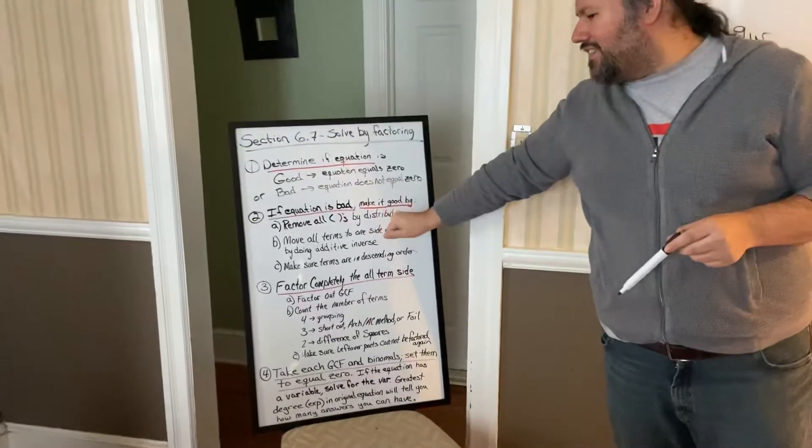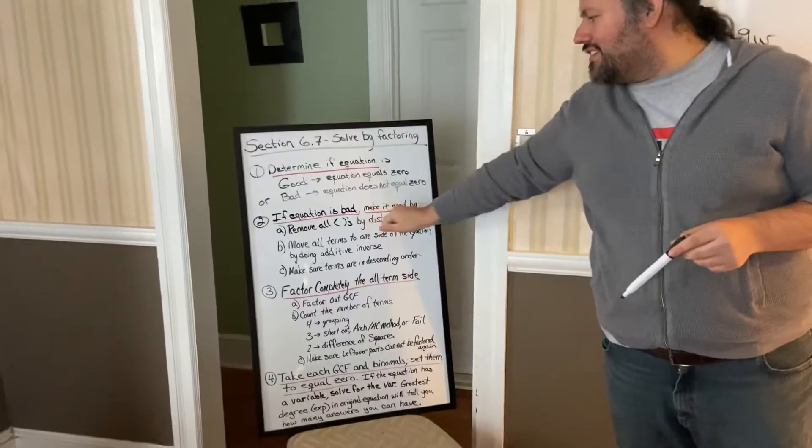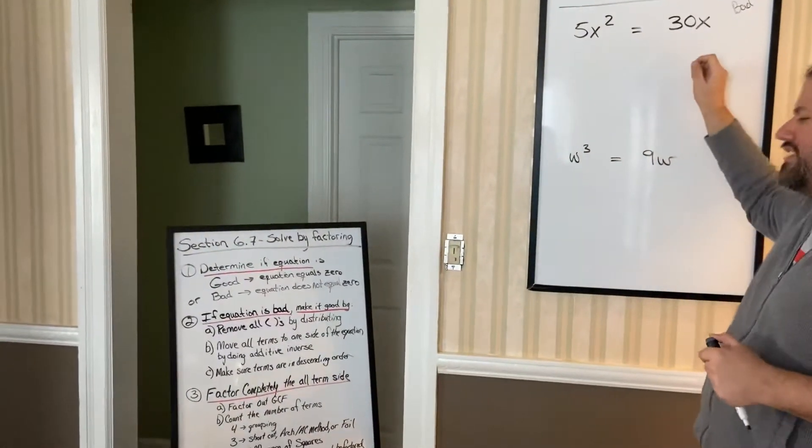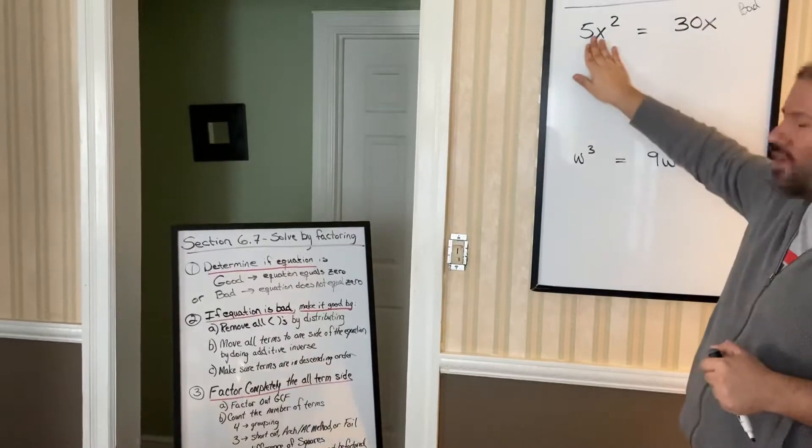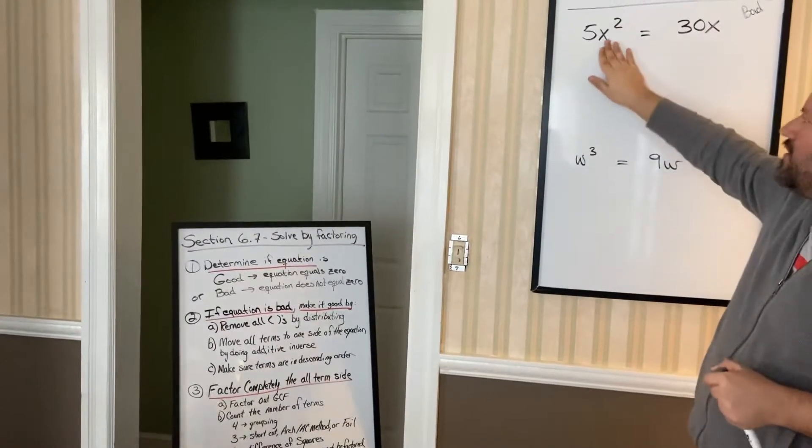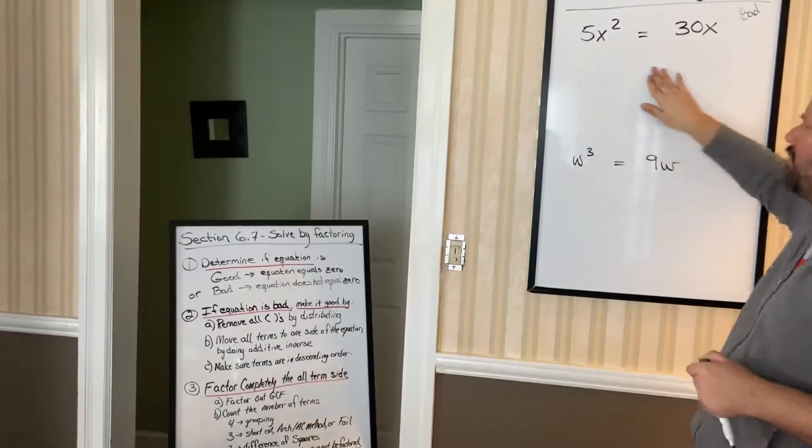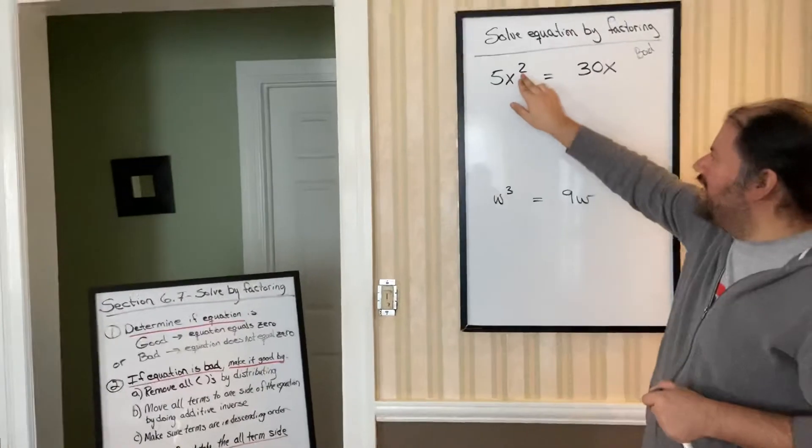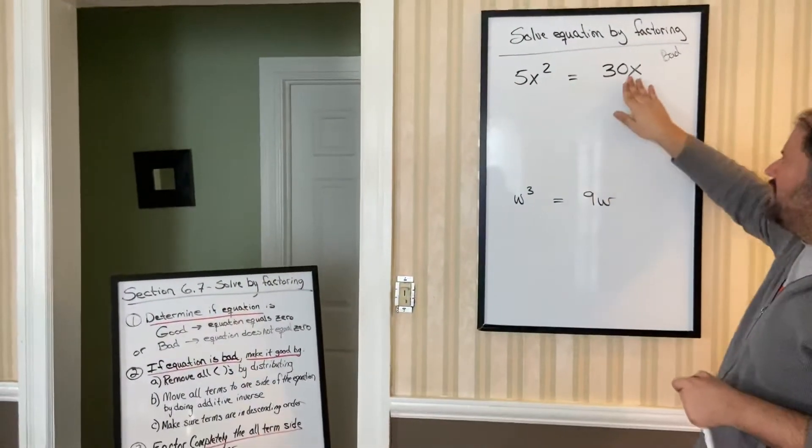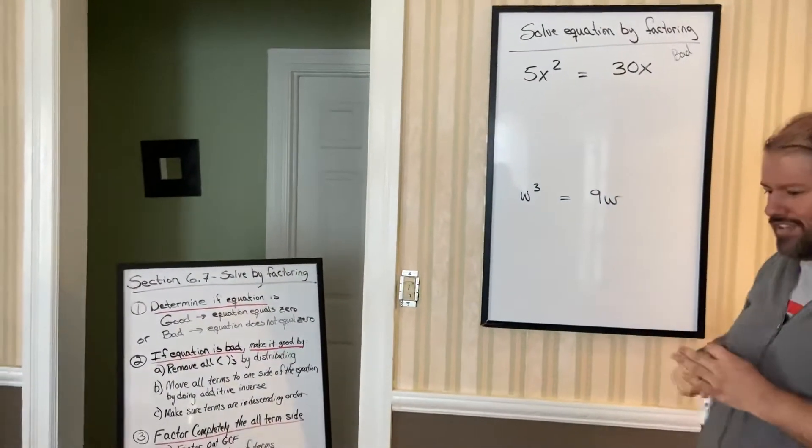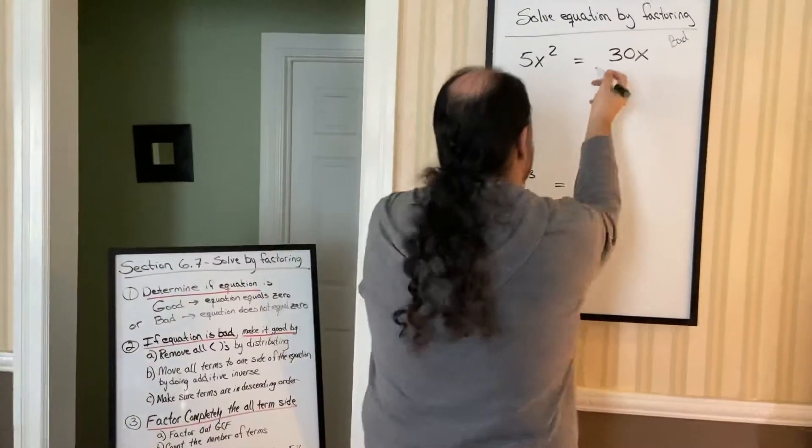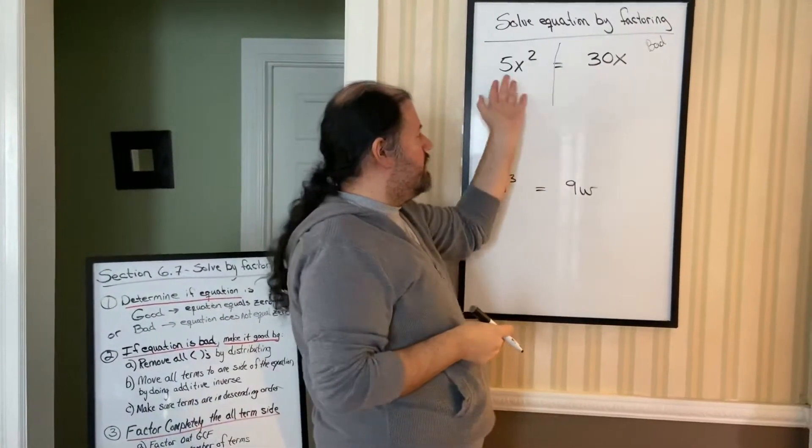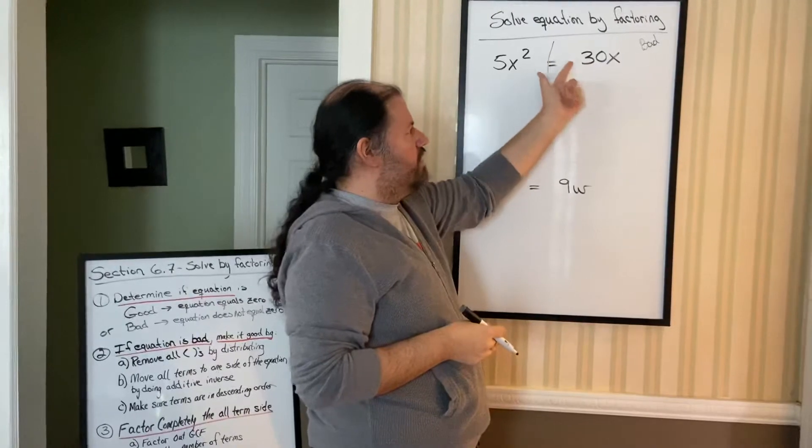So we do have to do step two. We are going to see if there's any parentheses that we have to distribute. Now, then we're going to see how to move the term over. Now I'm going to move the 30x over. Some people might say, well, why don't you move the 5x squared over? It's because I like to keep my highest degree positive. It makes it easier for me. So I just want to move the 30x over. How do we move the 30x over? You remember, you have a left-hand side and a right-hand side. If I want to move this 30x to this side, then you have to do the additive inverse, opposite sign. So since this is positive, the opposite would be negative.